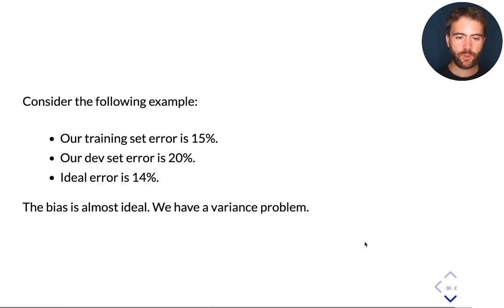For example, if we have performance which looks like this: our ideal optimal error is 14%, our training set error is 15%, and development is 20%, well, our bias here is almost ideal. So we should not spend too much effort trying to fix bias. We need to address our variance, which is higher.